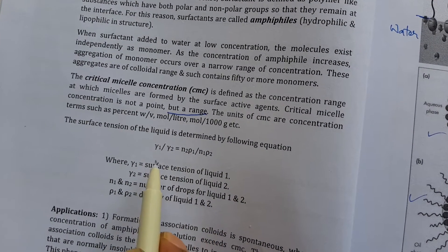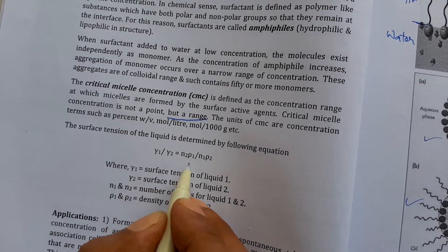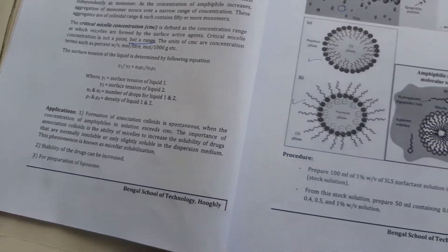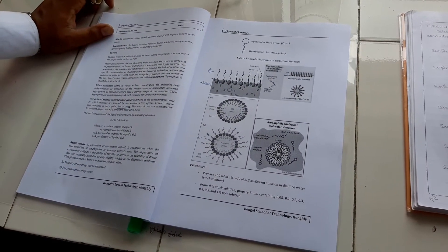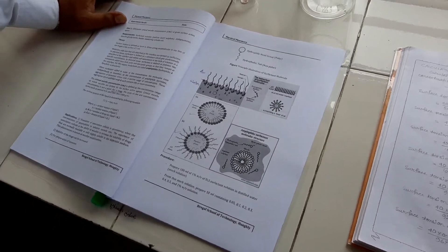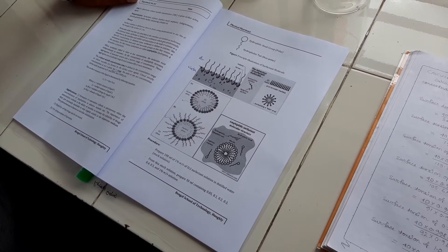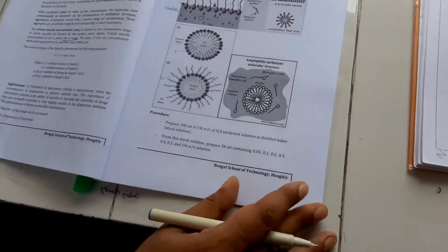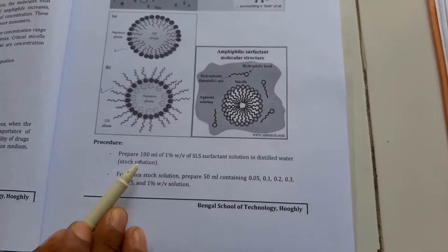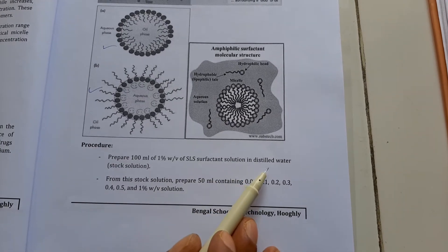The same formula used in the last practical for determination of surface tension — that is γ₁/γ₂ = N₂ρ₁ / N₁ρ₂ — is the same formula you have to use for this determination. For this practical, you have to take the sample SLS, sodium lauryl sulfate, which is one example of a surfactant or surface active agent. We have to determine the CMC value of SLS. First, you have to prepare 100 ml of 1% w/v of SLS surfactant solution in distilled water.